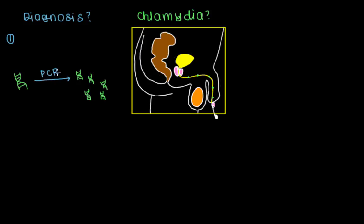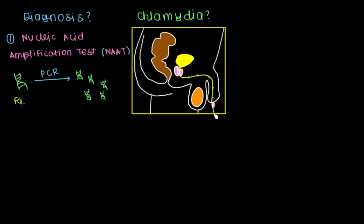Maybe you've heard of PCR before. Using this test to diagnose chlamydia is called a nucleic acid amplification test, or NAAT. This test is great because not only is it fast, but it's also more sensitive and more specific than other tests. More sensitive means we're less likely to have false negatives, and more specific means we're less likely to have false positives. So it makes sense that this is the most common test we use to diagnose chlamydia.